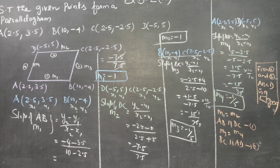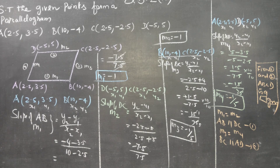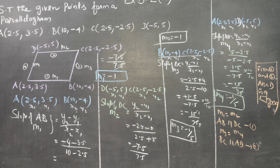This is the proof. Opposite sides are parallel — they are parallel lines. Both pairs of opposite sides are parallel, so it forms a parallelogram. Thank you.